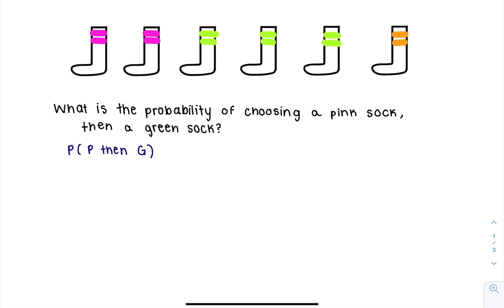So if I pick out a pink sock first off, I have one, two, three, four, five, six socks and two of them are pink. So my probability of drawing out a pink sock is two out of six.